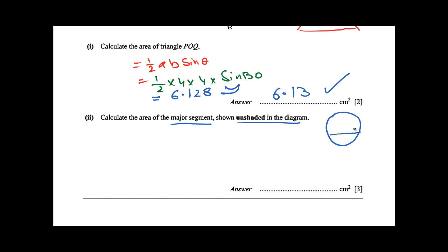If we divide this way, then we have segments. This is called the major segment, and this is called the minor segment.